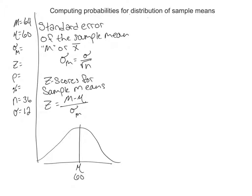So what we're trying to do here is trying to find the probability of the mean score being greater than 64. That's our goal there.